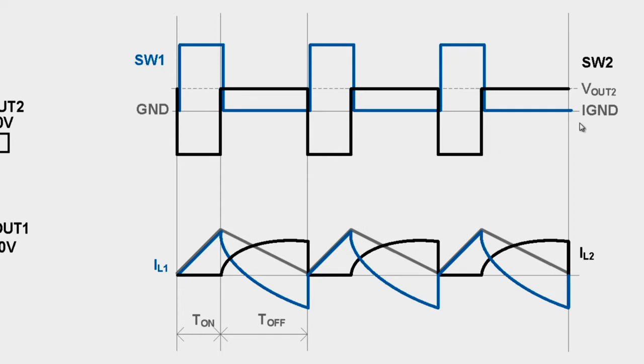On the right hand side axis, we have the secondary side quantities, switch node 2, Vout2, isolated ground, and the current in the secondary winding. Also shown is the magnetizing current in gray.